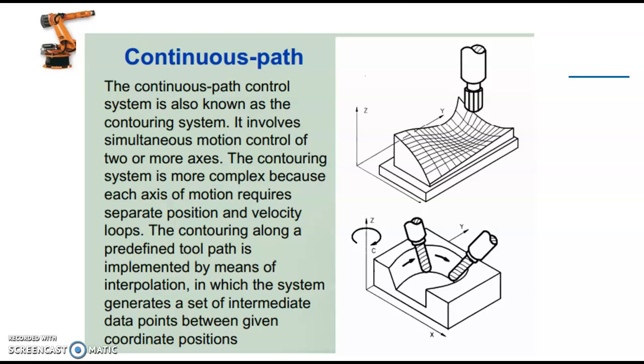And the last one is a continuous path system. This one is otherwise known as contouring system. It involves the simultaneous motion control of two or more axes. So in this case, it is possible to move the tool simultaneously in either two directions or three directions or three axes. In this first figure, we can tell that if you wanted to machine a shape like this, this is a contour, we wanted to machine a contour like this. It involves simultaneous movements in X-axis, Y-axis, and Z-axis. So three axes are in movement. And here we can see that this is a curve. So this curve is actually made by simultaneous movement in X-axis and Y-axis. So these simultaneous movements of the axes, two or more axes, is possible in continuous or contouring system.